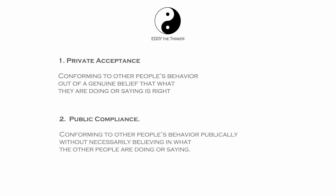Let's go back to the sushi restaurant example. Would you have conformed if the person you were observing was eating sushi with a fork, or perhaps with his fingers? This is an example of private acceptance.